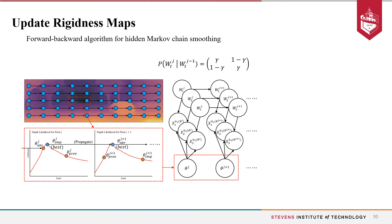For updating rigidness maps, we pose a smoothness term on the 1D hidden Markov chain, and this can be efficiently solved using a forward and backward algorithm.